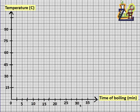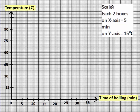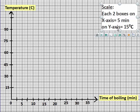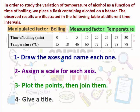We chose the scale so that on the x-axis each box equals five minutes, and on the y-axis each box equals 15 degrees Celsius. We write the scale on the graph to show the reader: each box on the x-axis equals five minutes and each box on the y-axis equals 15 degrees Celsius.